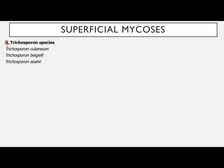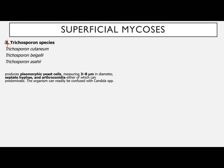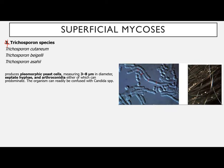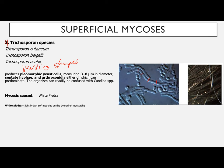The fourth organism is Trichosporon species, including Trichosporon cutaneum, Trichosporon beigelii, and Trichosporon asahii. They produce pleomorphic yeast cells measuring three to eight micrometers in diameter with septate hyphae and arthroconidia. The organism can readily be confused with Candida. Trichosporon is known to cause White Piedra, which produces light brown soft nodules on the beard or mustache.